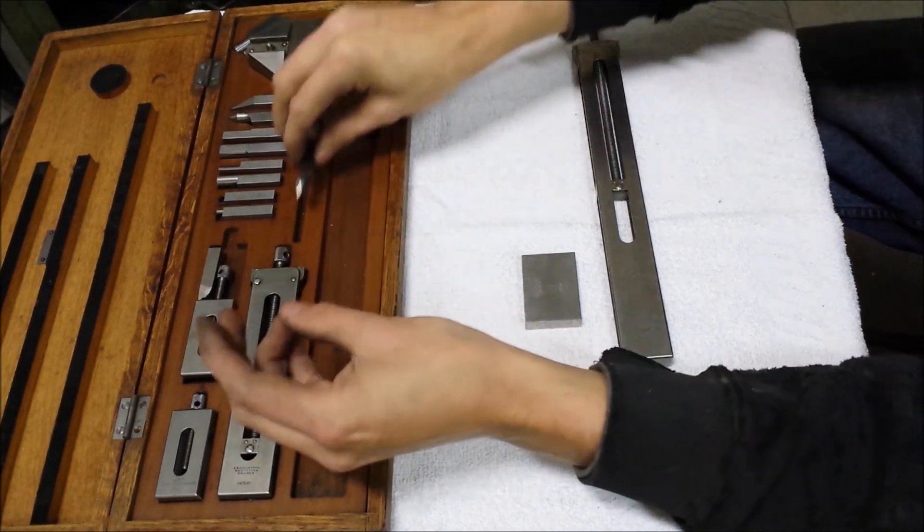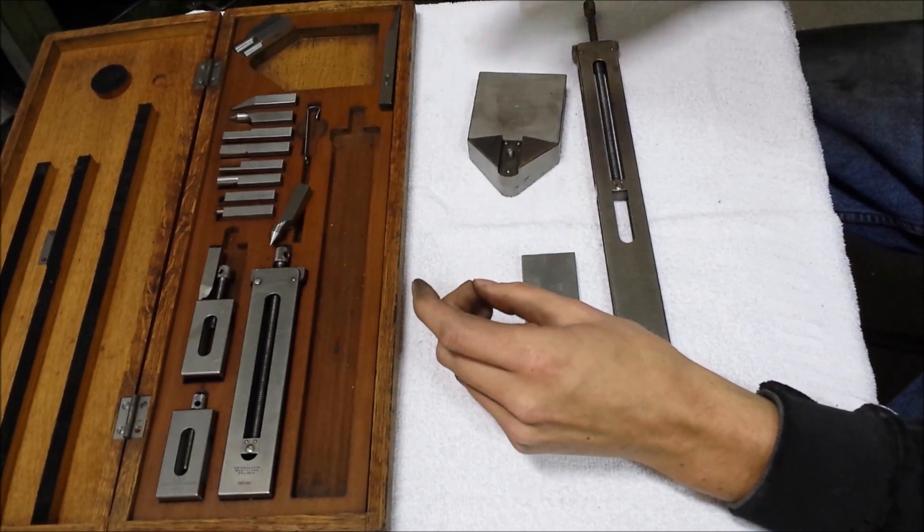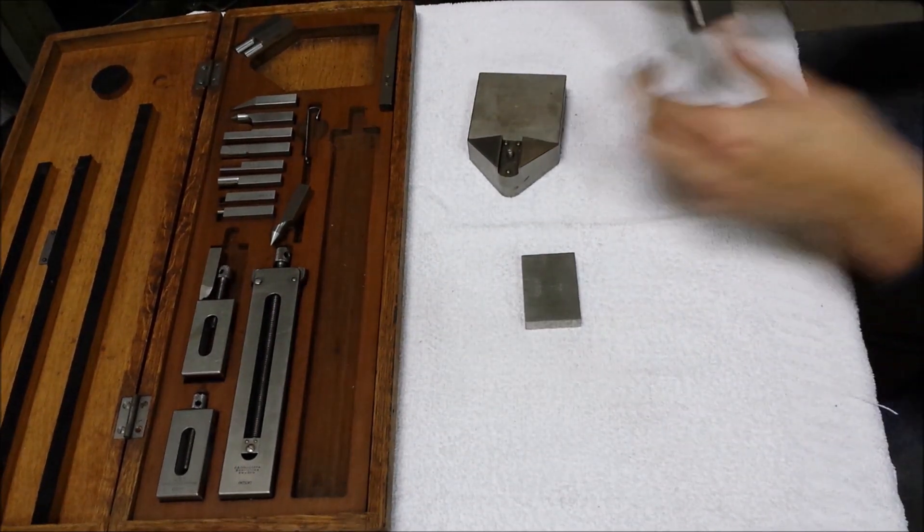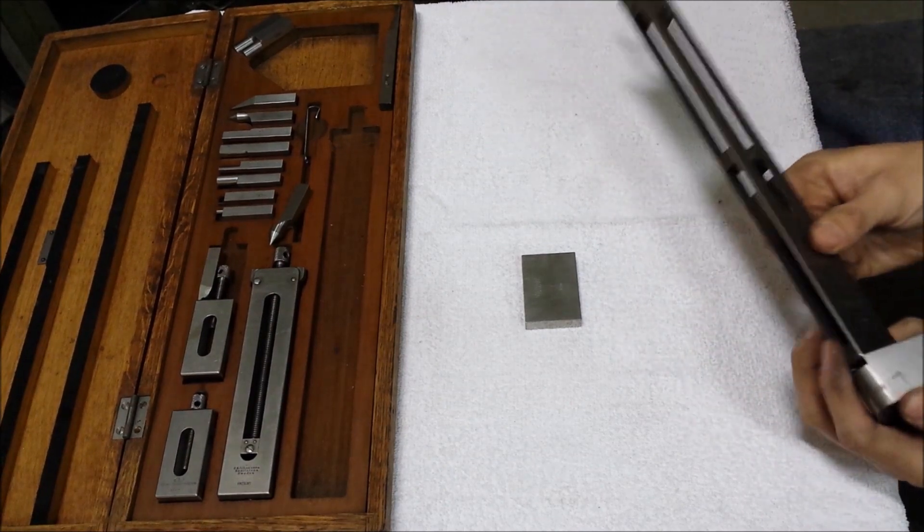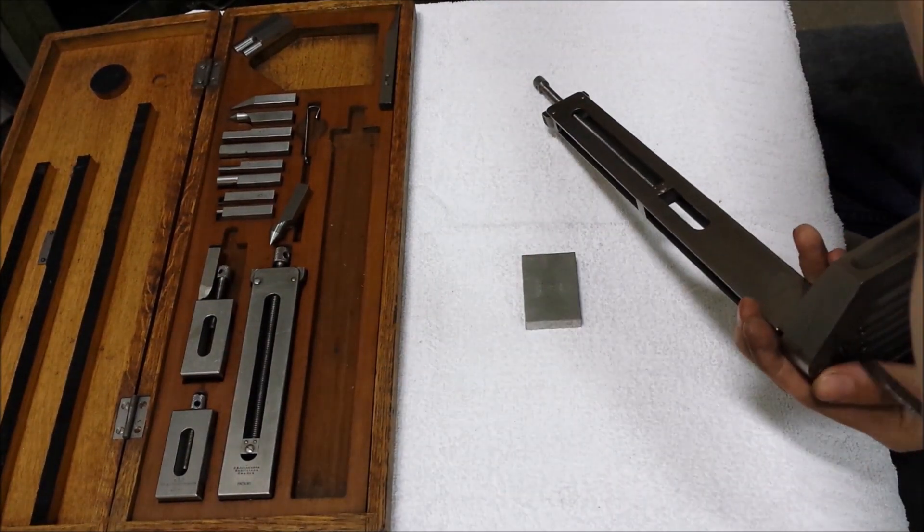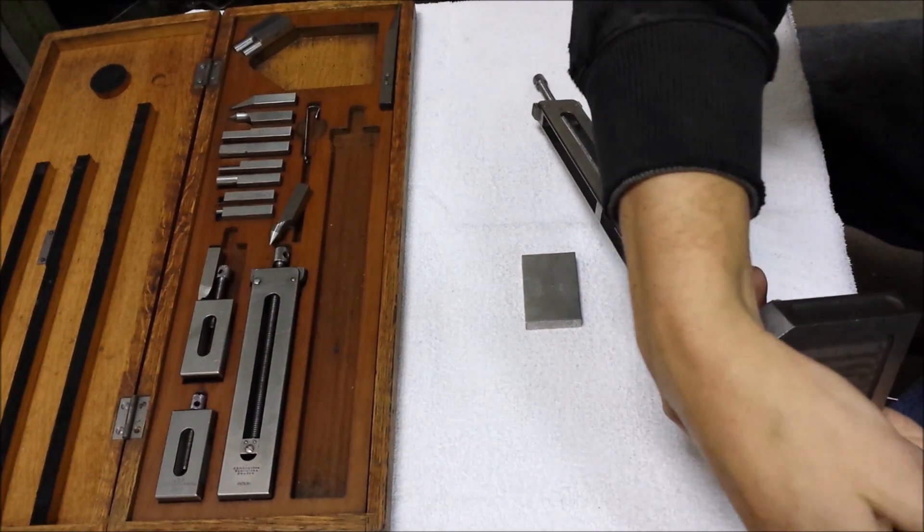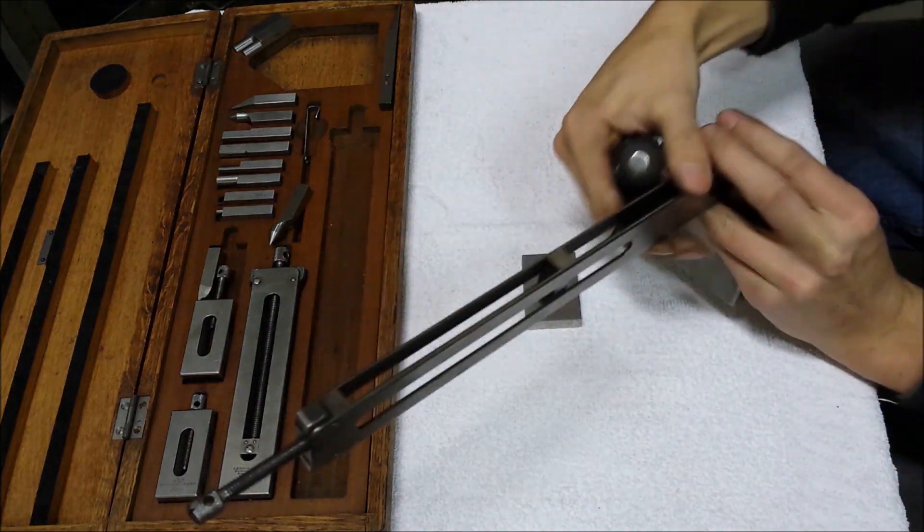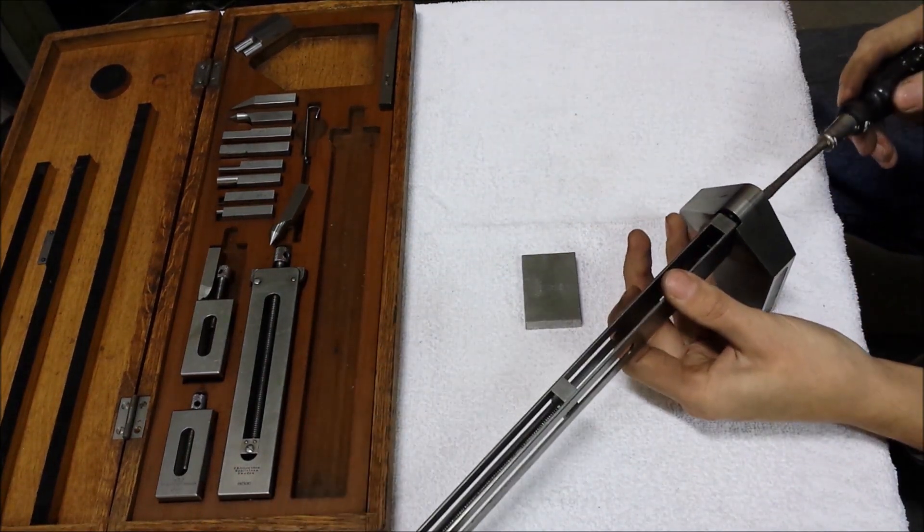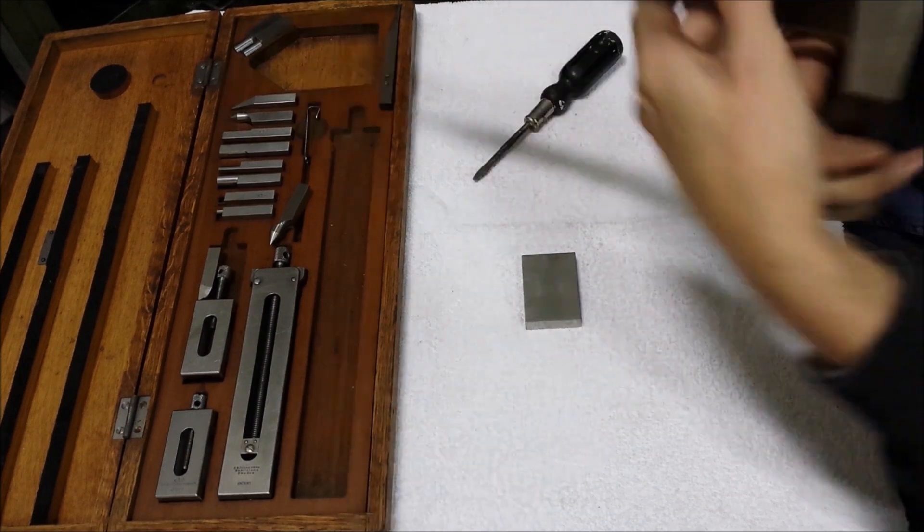Another thing that's included in this kit is this surface gauge thing. So let's see here. I'm trying to do this to show you, and it's pretty awkward.